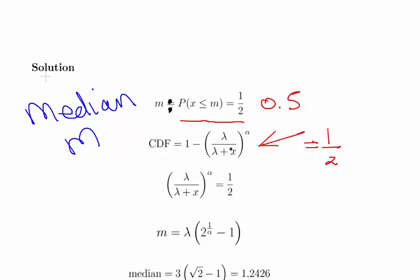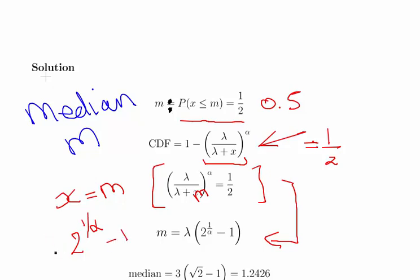It's 1 minus this term here equal to one half, so this expression here is also equal to one half. I'm going to let X equal to M here. I'm going to replace this value of X with an M. We're going to algebraically rearrange this. Just to be clear, that is 2 to the power of 1 over alpha minus 1, pre-multiplied by lambda. That is our value of the median.